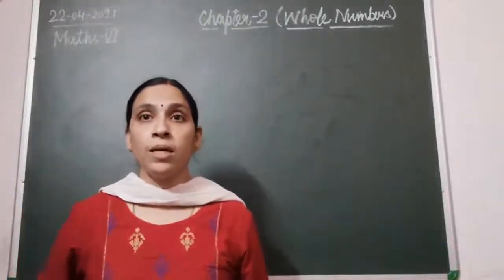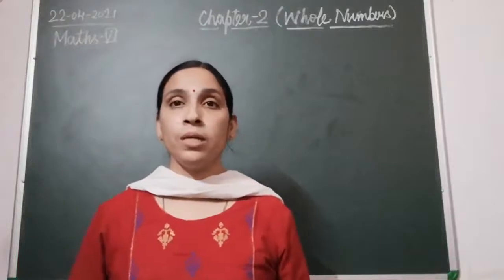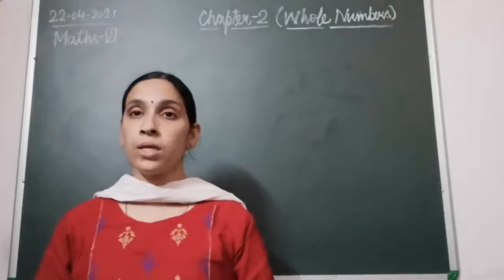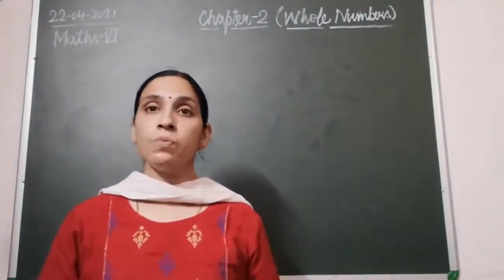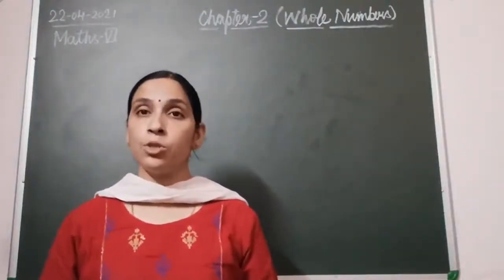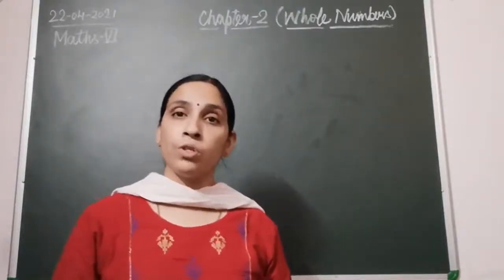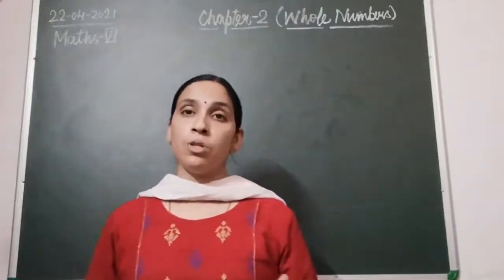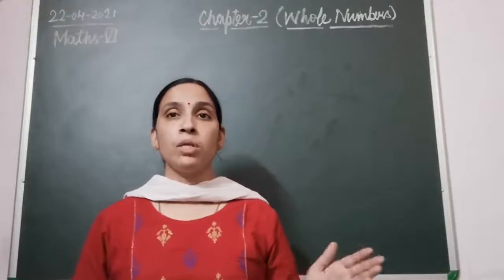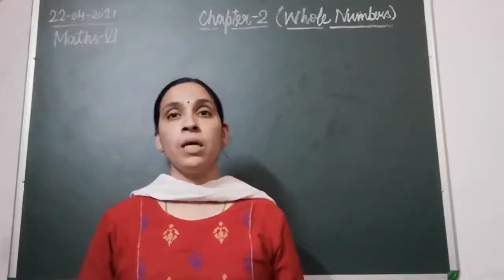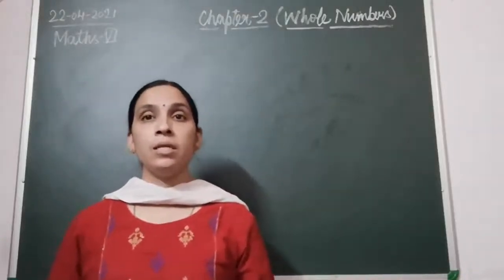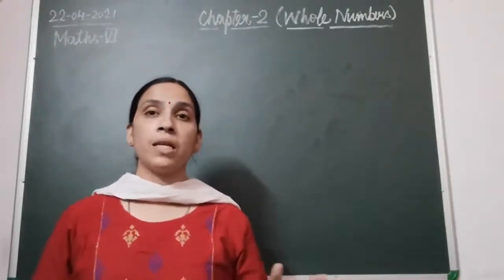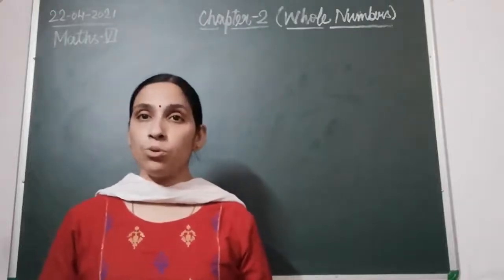Hello students, how are you all? I hope you are all doing good. As you are aware, we have finished with the first chapter on knowing our numbers, and in yesterday's video we started Chapter 2, that is Whole Numbers. We discussed what whole numbers are — natural numbers are one, two, three, four, five, six and so on, those counting numbers are known as natural numbers. When zero is included in natural numbers, that is known as whole numbers.